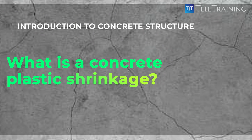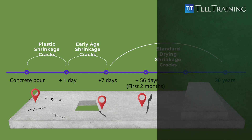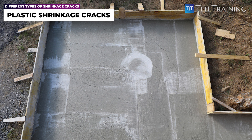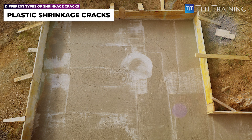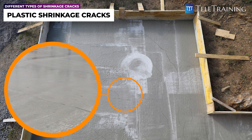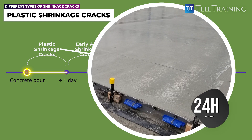What is a concrete plastic shrinkage crack? Plastic shrinkage cracks are more likely to form on exposed surfaces of freshly poured concrete, particularly in hot or windy weather conditions. They are named plastic shrinkage cracks because they develop while the concrete is still in a plastic state, typically within the first 24 hours after pouring when the concrete is still wet.